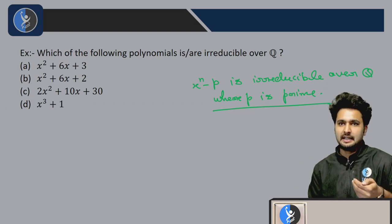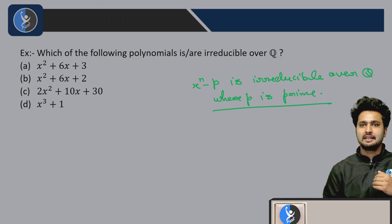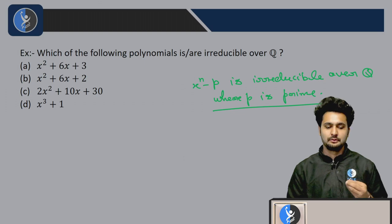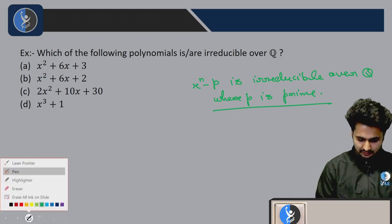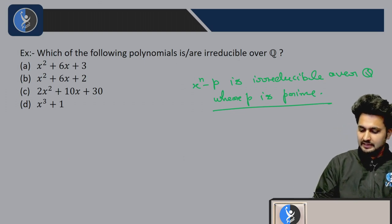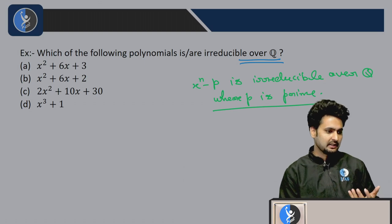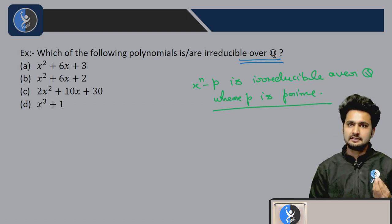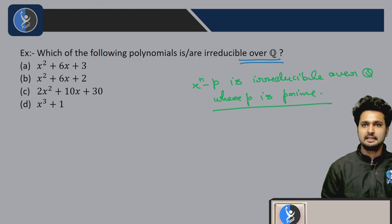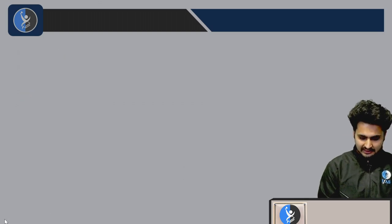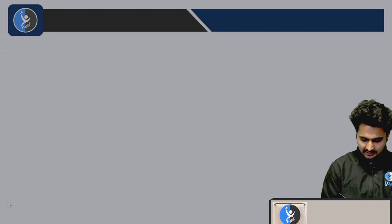Now let us know the Eisenstein criterion. If you have questions like which of the following polynomials is irreducible over Q, in this question I think two or three questions of Eisenstein's irreducibility criterion you can do.